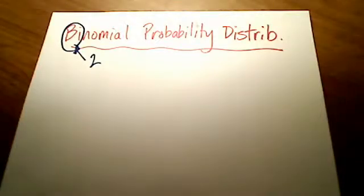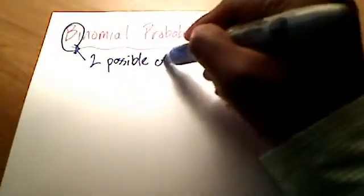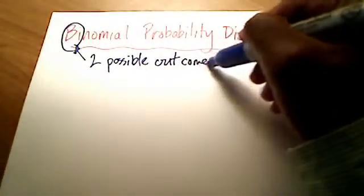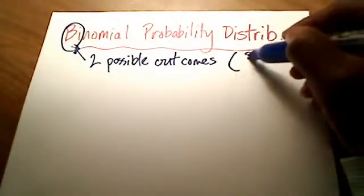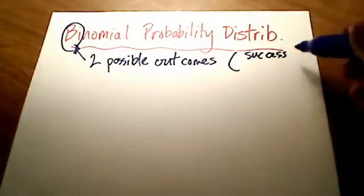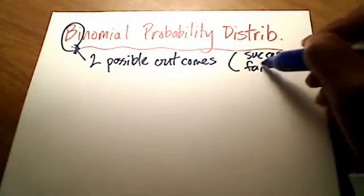Two possible outcomes: something called success and the other outcome is failure. So let me put here, two possible outcomes - we'll call them success and failure.